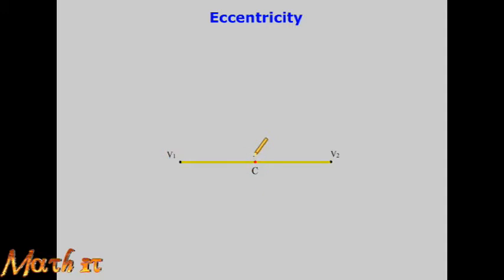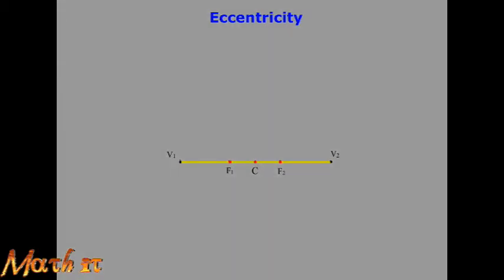Now let's place an ellipse here. We need to change the center point — instead of one center, we use two focus points. All points on the ellipse relate to these two focus points. The two focus points are placed symmetrically at the center. For example, if the first focus point F1 is to the left side of center by 5 units, then the second focus point F2 is to the right side, in the opposite direction, the same distance of 5 units. So we place center point C, with F1 on the left and F2 on the right.